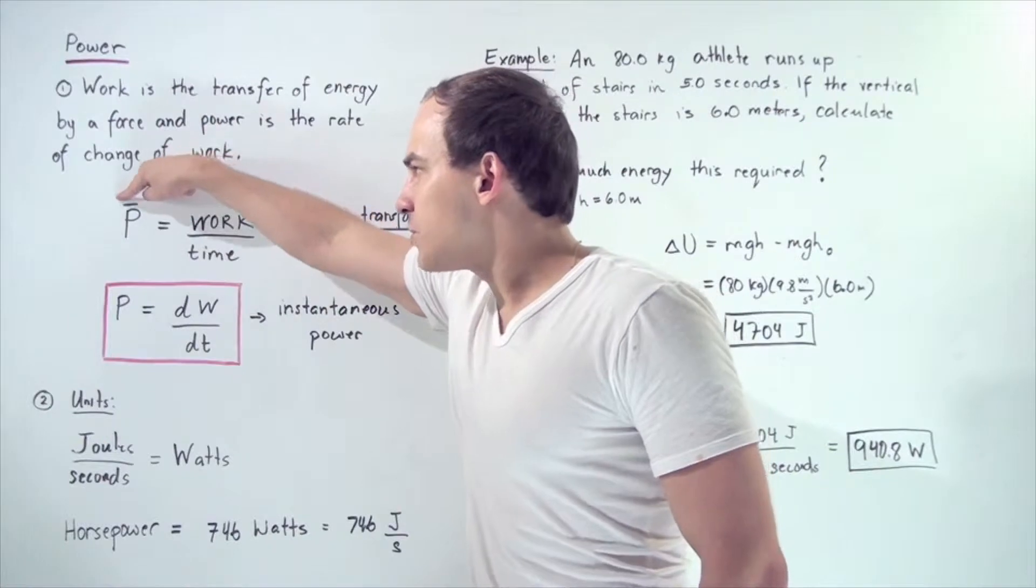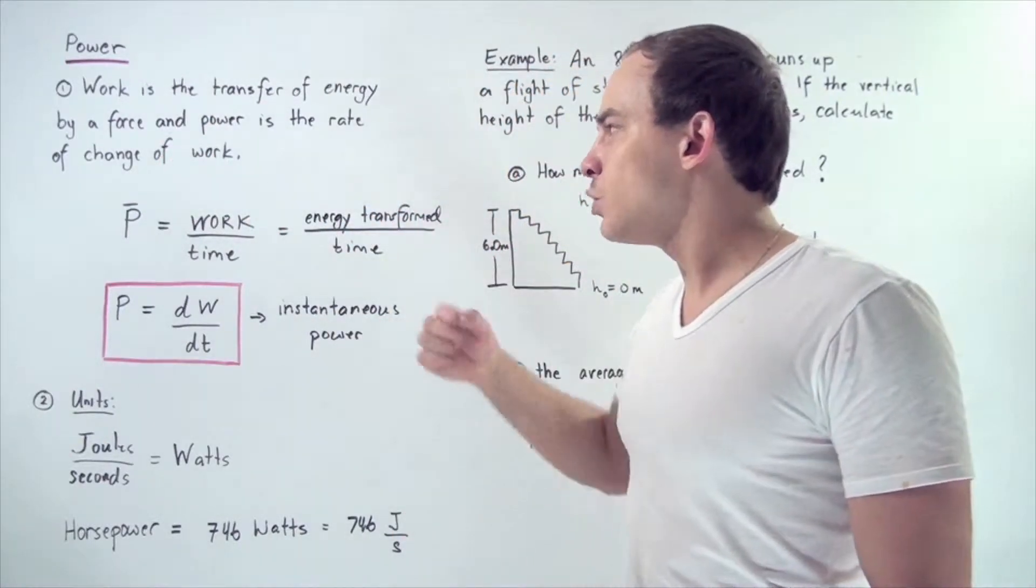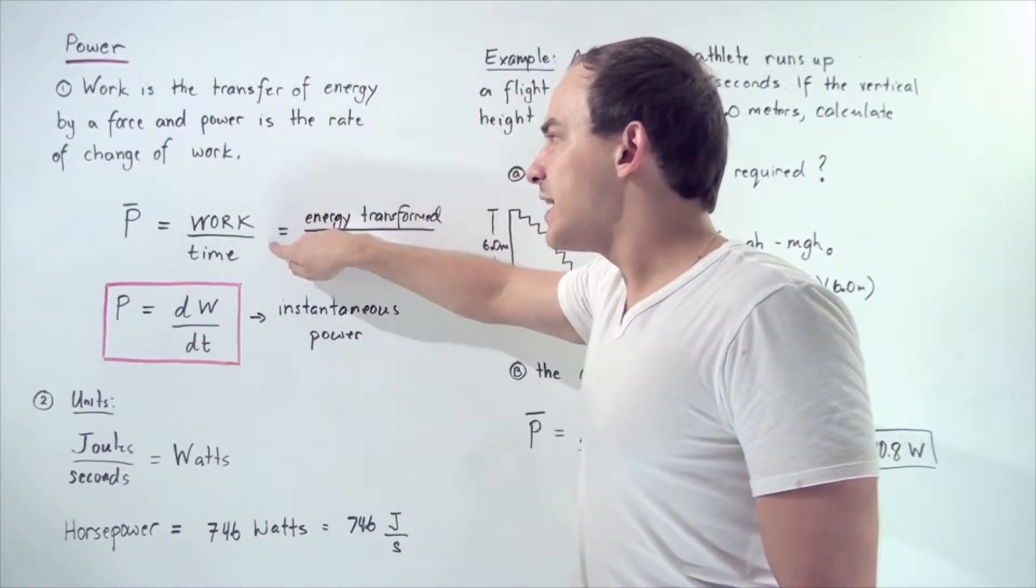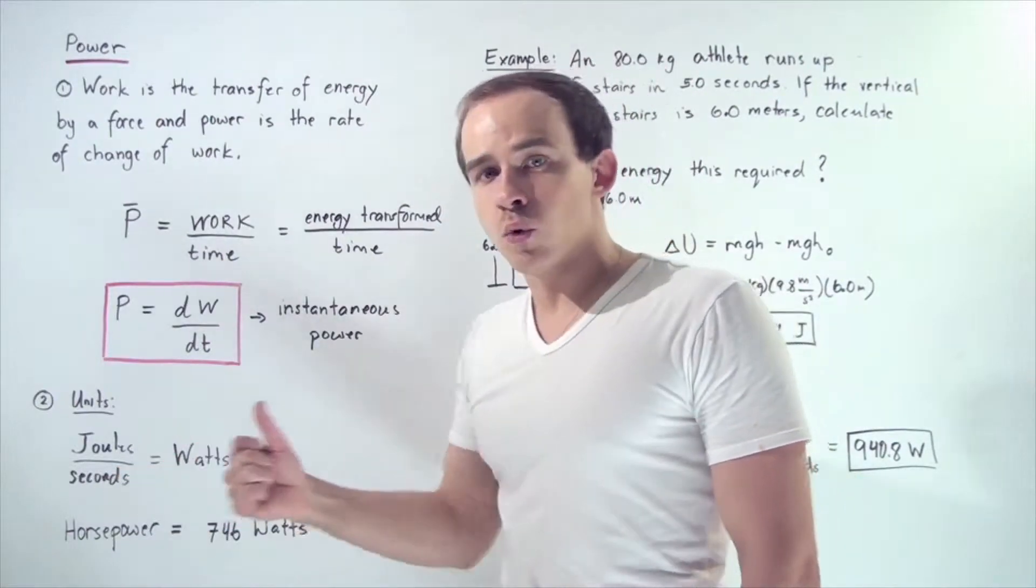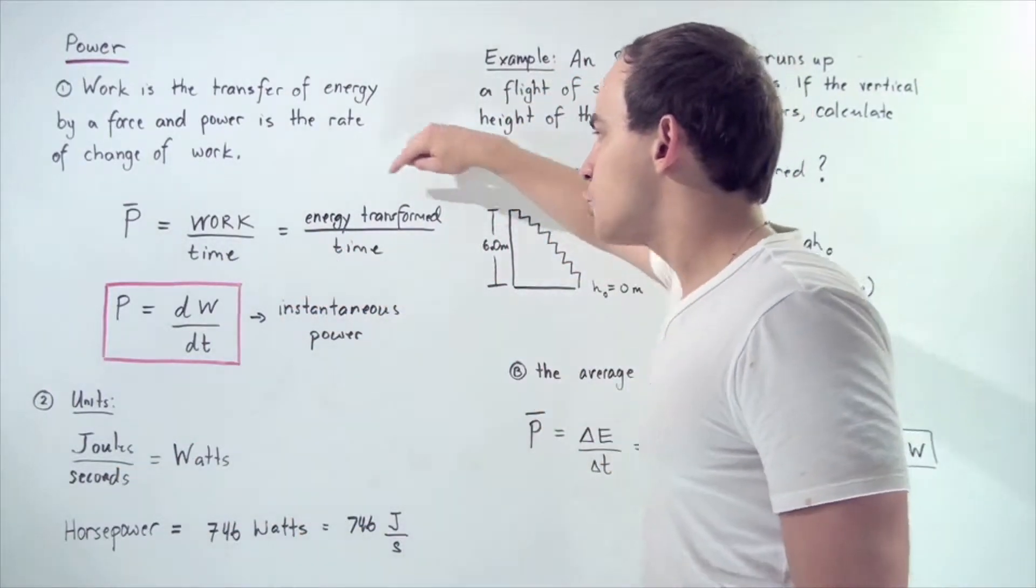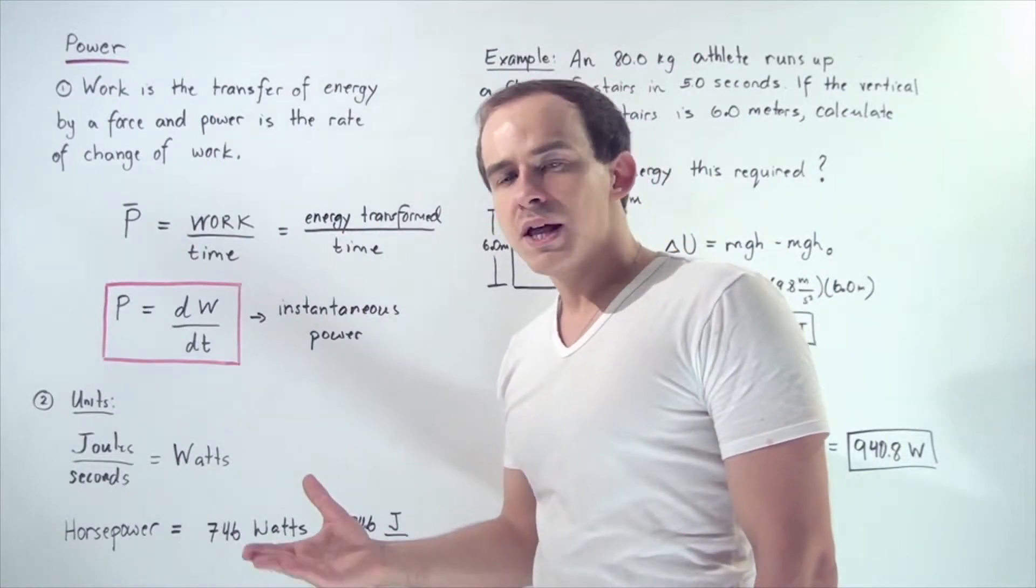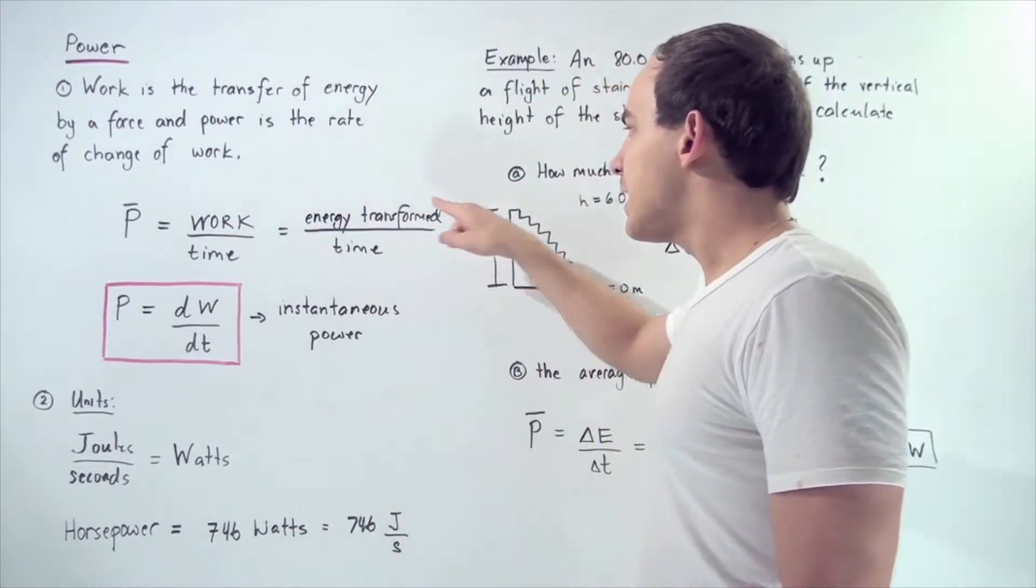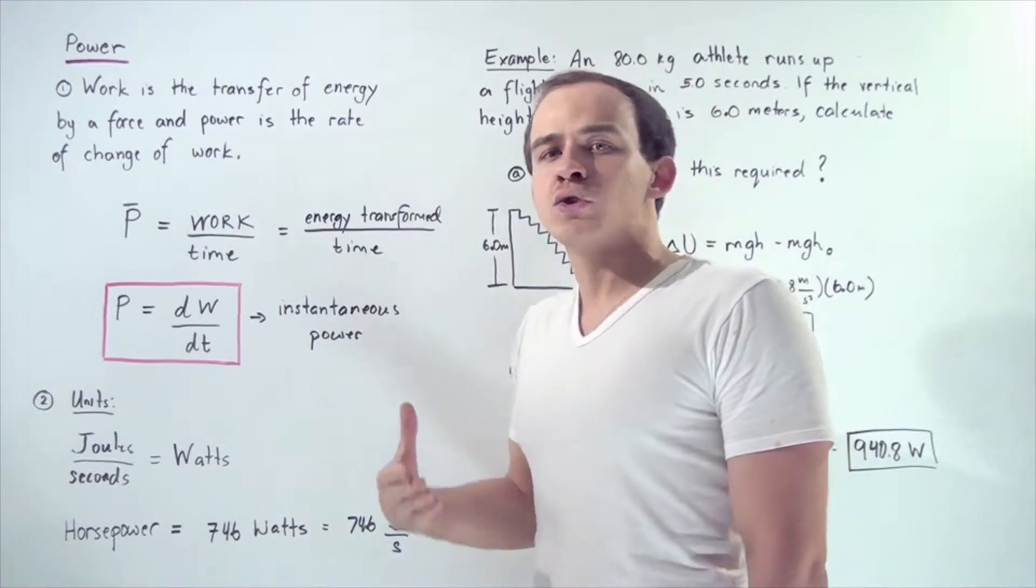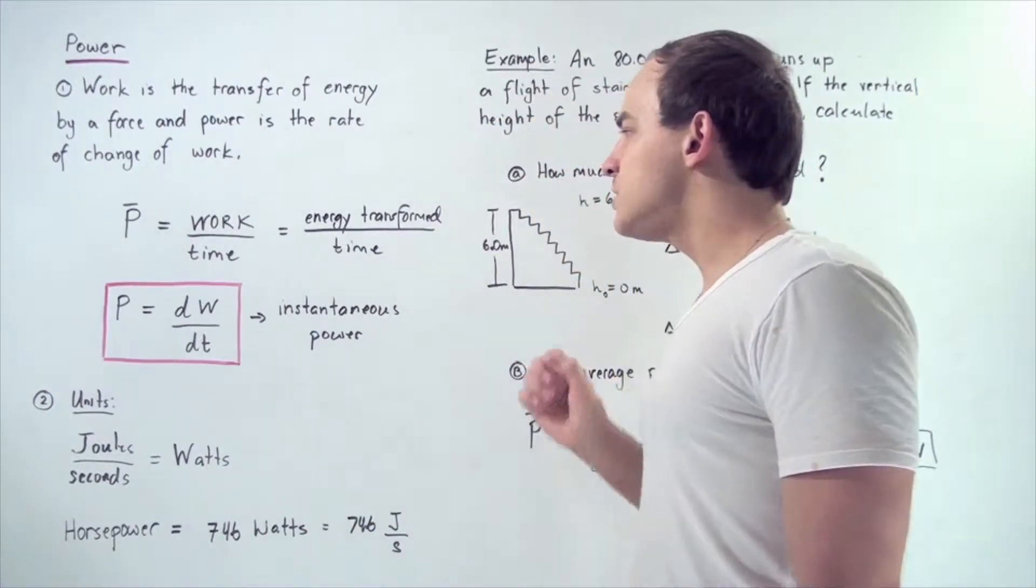Average power, given with the bar symbol on top, is equal to the work done divided by the time it took to do that work. This is equivalent to the quantity of energy transformed, the change in energy, divided by the time it took for that transformation of energy to take place.